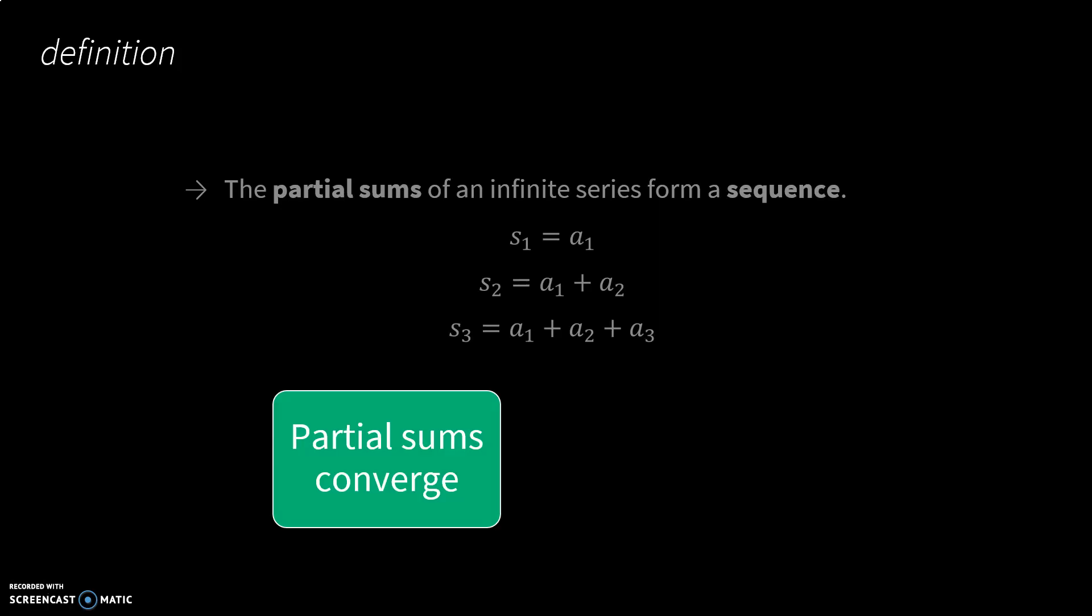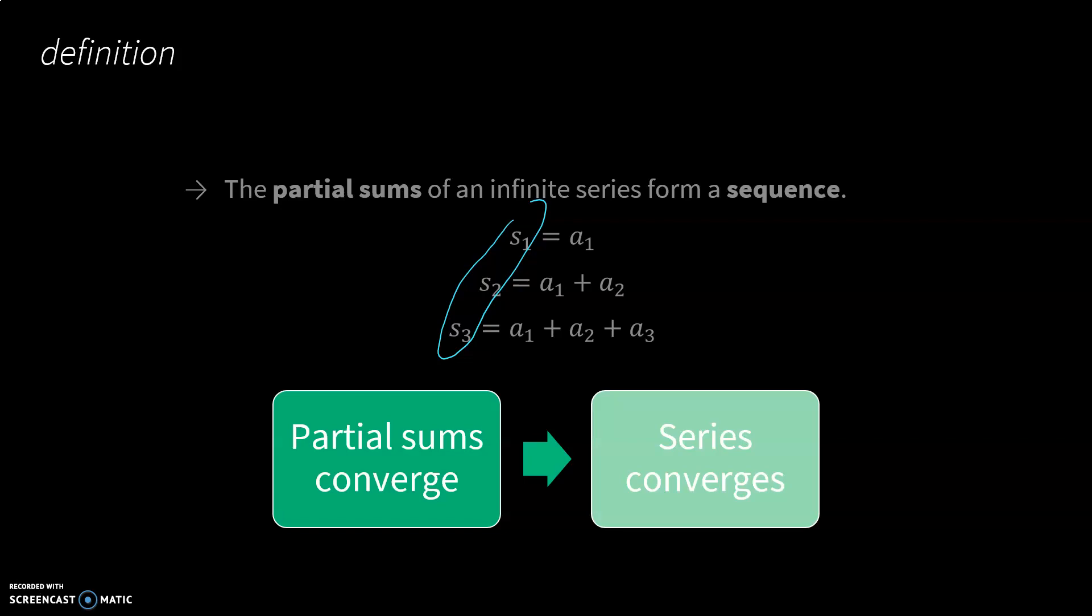Our first test for deciding whether a series converges is we are going to do what's called the partial sum. The partial sum is the first partial sum would just be the first term. The second partial sum would be the sum of the first two terms. The third partial sum would be the sum of the first three terms, and so on. If those partial sums, if these numbers converge to a number, then our series converges as well. This is our first test for whether a series converges, by looking at the partial sums.